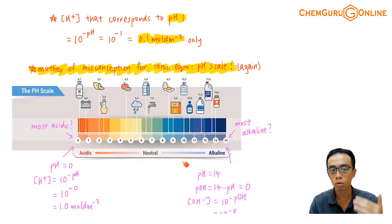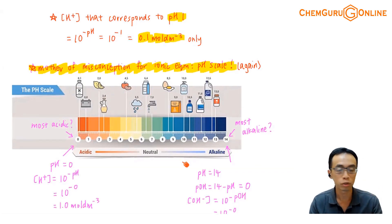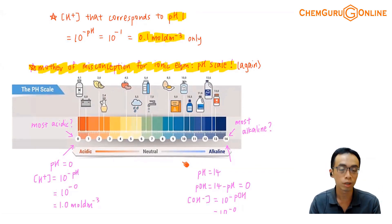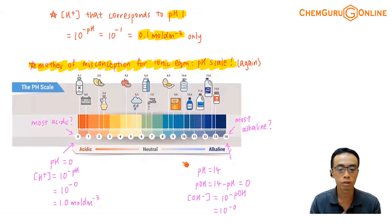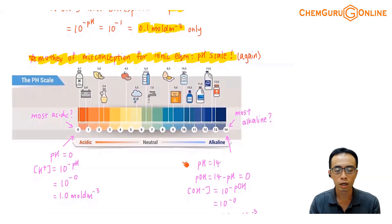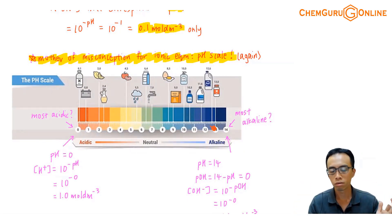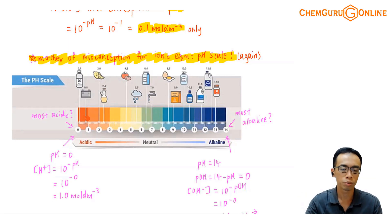When we do questions, we might be using an outdated concept without knowing it. So some of these ideas — please keep them in mind. In this case, for this portion, we are just trying to clarify: is it really true that pH 0 is the lowest possible pH?